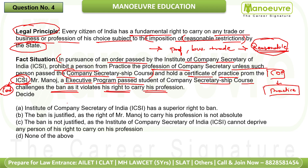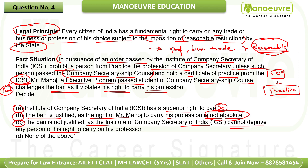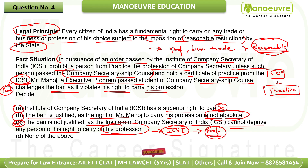Mr. Manoj's challenge will not succeed. Option A — that ICSI has a superior right to ban — is wrong, because reasonable restrictions are what matter, not superiority. Option C — that ICSI cannot deprive any person of his right to practise — is also wrong, because ICSI merely set a reasonable rule, not an absolute deprivation. Option D (none of the above) is incorrect. The correct answer is Option B: the ban is justified because Mr. Manoj's right to carry his profession is not absolute.